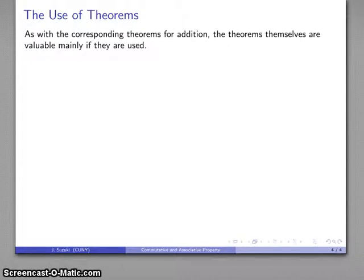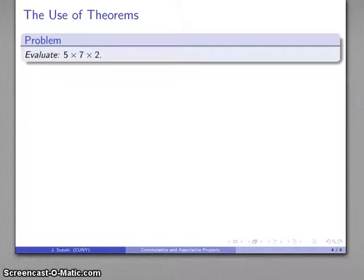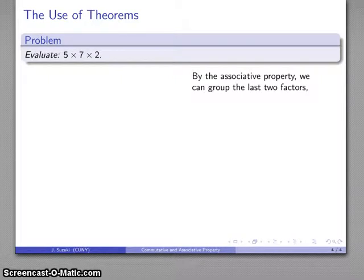Well, as with the addition theorems, the theorems themselves are primarily valuable in their use, not in their rote memorization. So for example, let's take a look at a product 5 times 7 times 2. And by the associative property, I can group the last two factors.